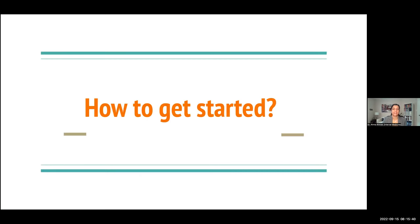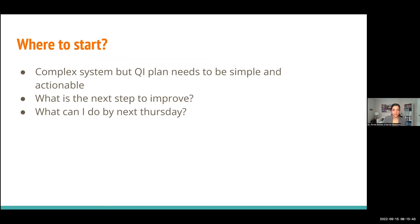How do you get started? Quality improvement plans need to be simple and actionable. There's a tendency to want to overhaul everything at once, but the key is asking: what is the next step to improve? It needs to be actionable — what can I do by next Thursday? Not fixing everything in one day, but starting somewhere.